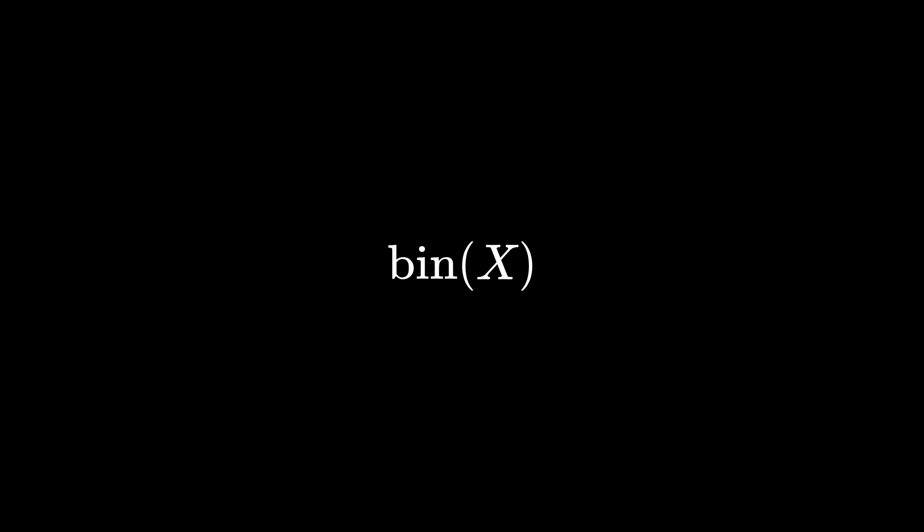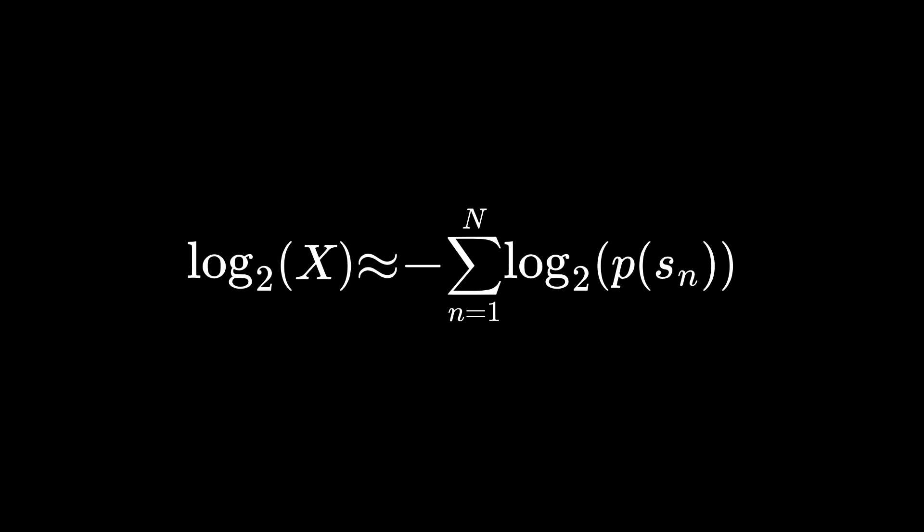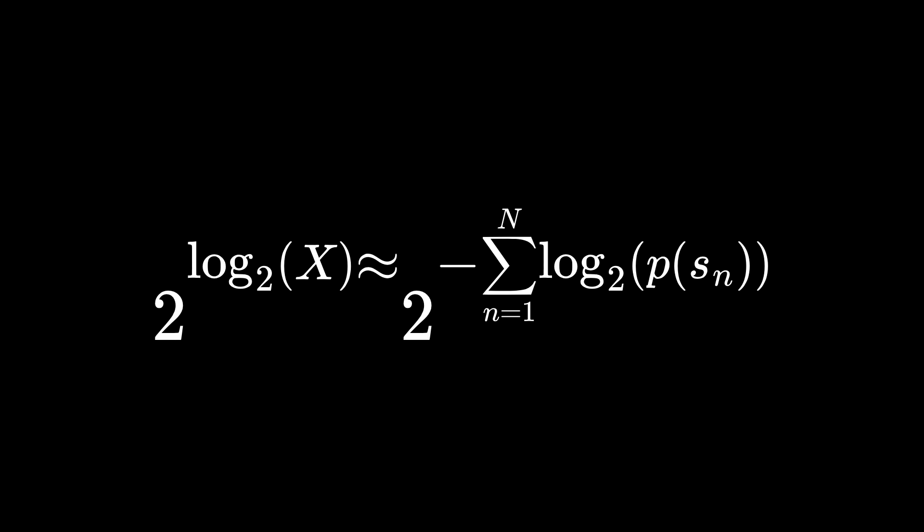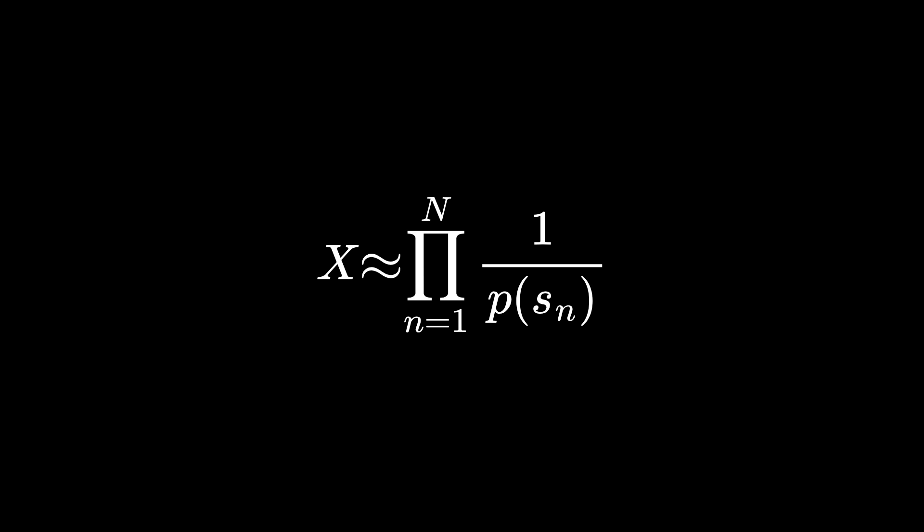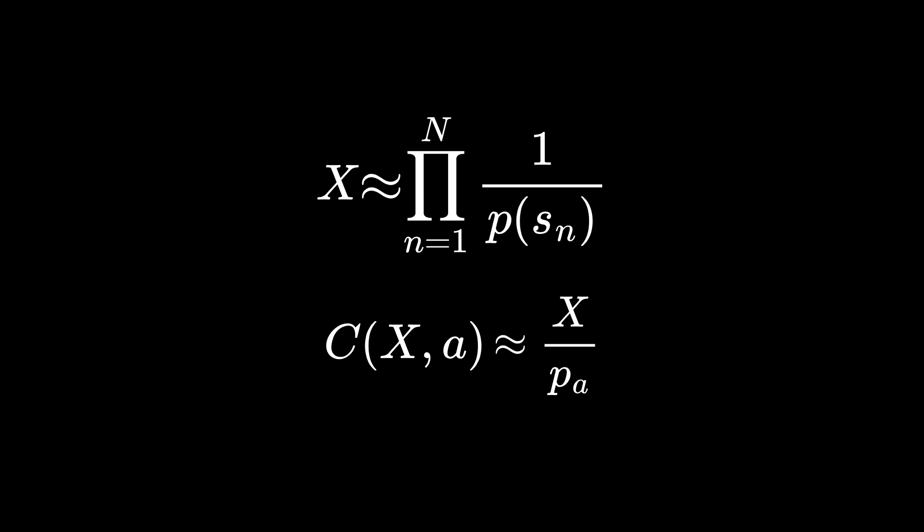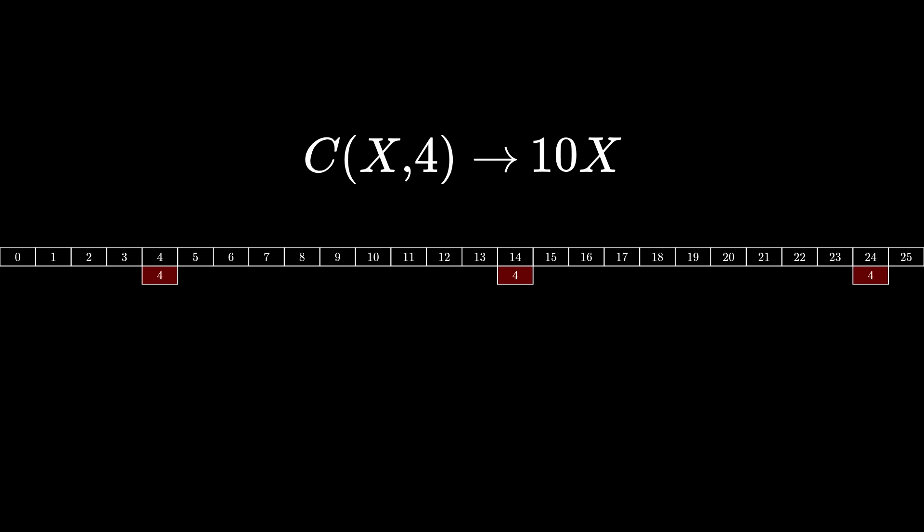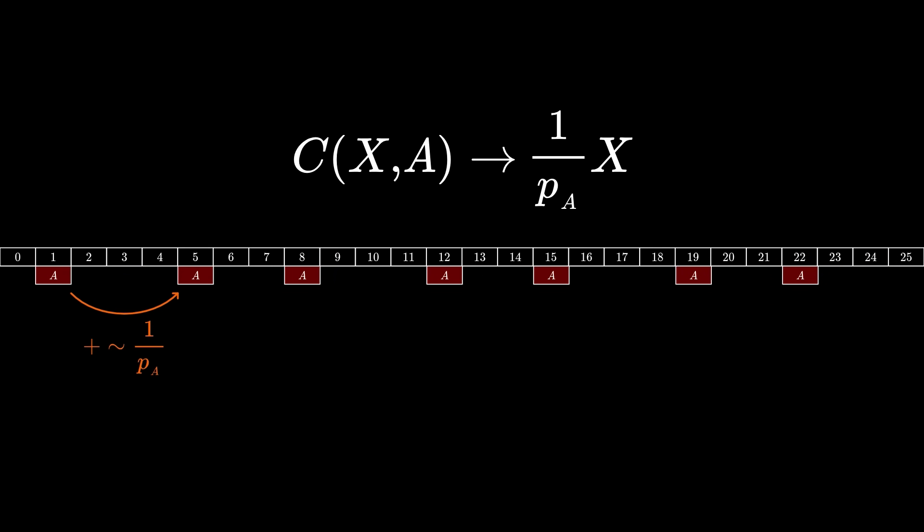To generate this labeling, let's think about approximately how big c of x comma a should get for some symbol a. The binary representation of x is what we'll use as a code, so if we encode n symbols, then the length of x in binary should be about the sum of the information content of the first n symbols. If we exponentiate with a base of 2, we find that x should be approximately equal to the product of the reciprocals of the probabilities of the symbols. So when we encode a new symbol a, then c of x comma a should be around x divided by the probability of a.